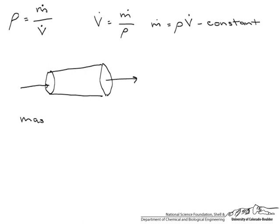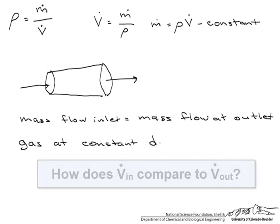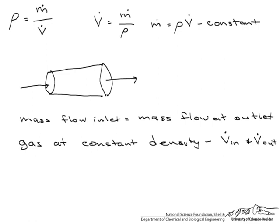The mass flow at the inlet has to equal the mass flow at the outlet. Now let's say we have a gas at constant density. What can we say about the volumetric flow rate going in, and the volumetric flow rate going out?